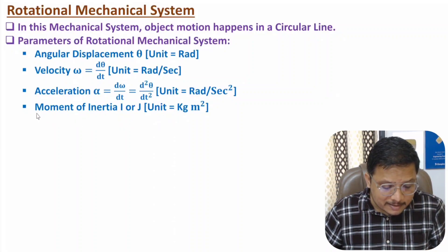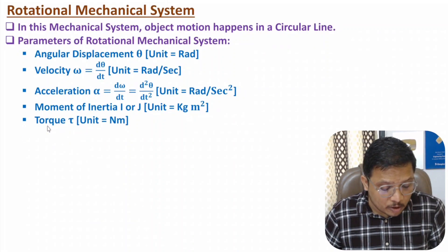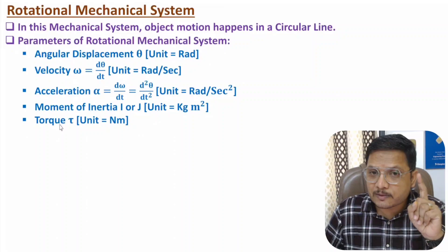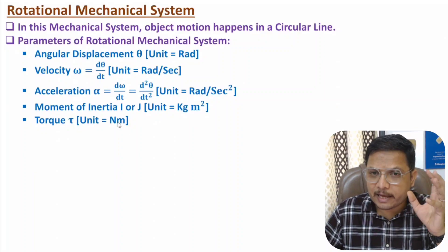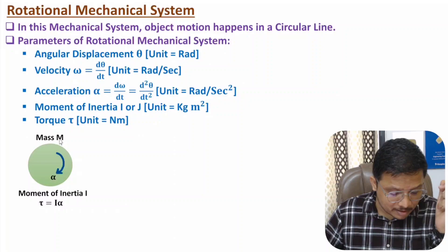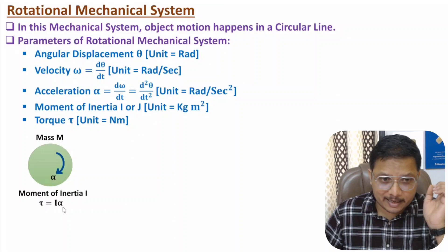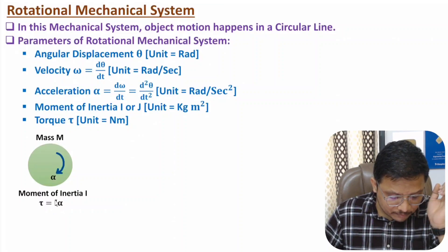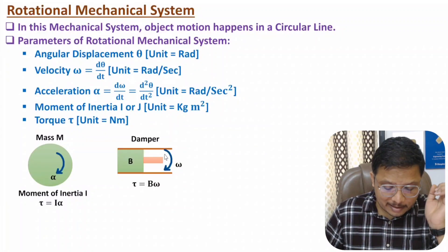The last parameter is torque. In linear motion we consider force; in circular motion we consider torque. The unit of torque is Newton meter. If a body has moment of inertia I and is revolving with angular acceleration alpha, then torque T = I × alpha. This is analogous to the force equation F = m × a, where instead of mass we have moment of inertia and instead of linear acceleration we have angular acceleration.